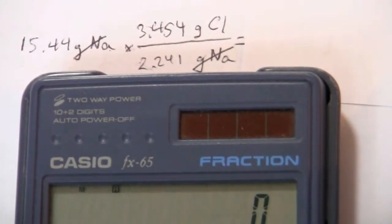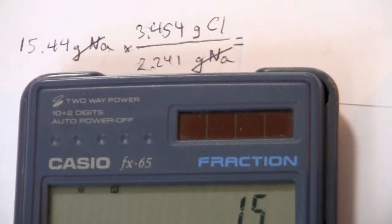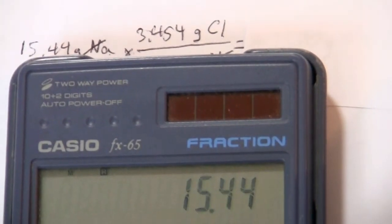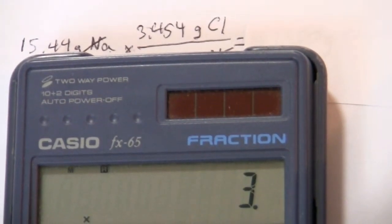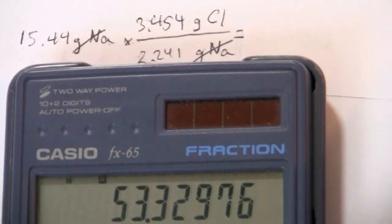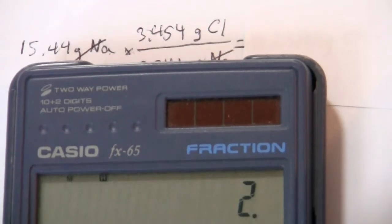All right, so when we do this calculation on the calculator, we have 15.44 and we're multiplying that by 3.454 and dividing that by 2.241.